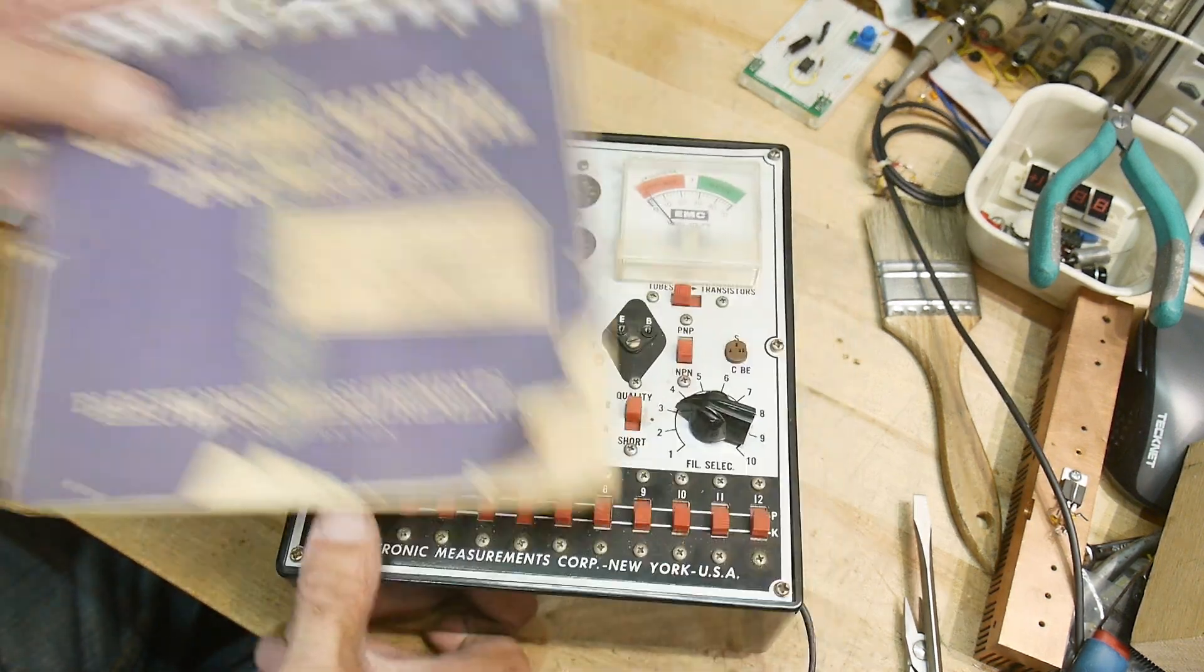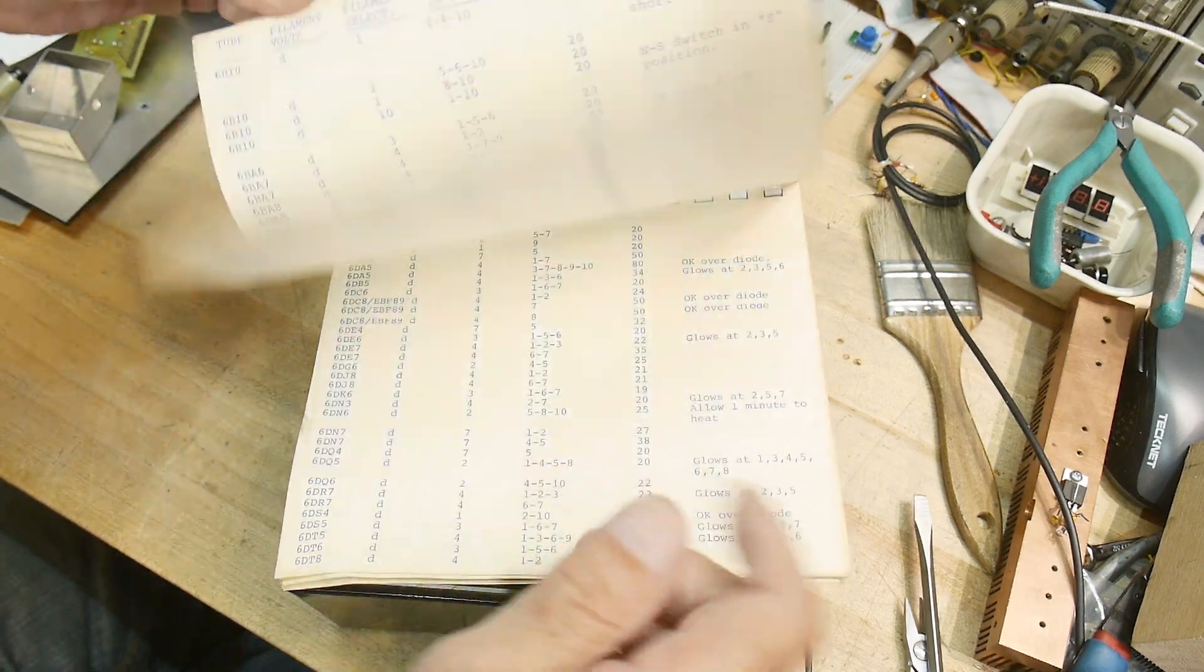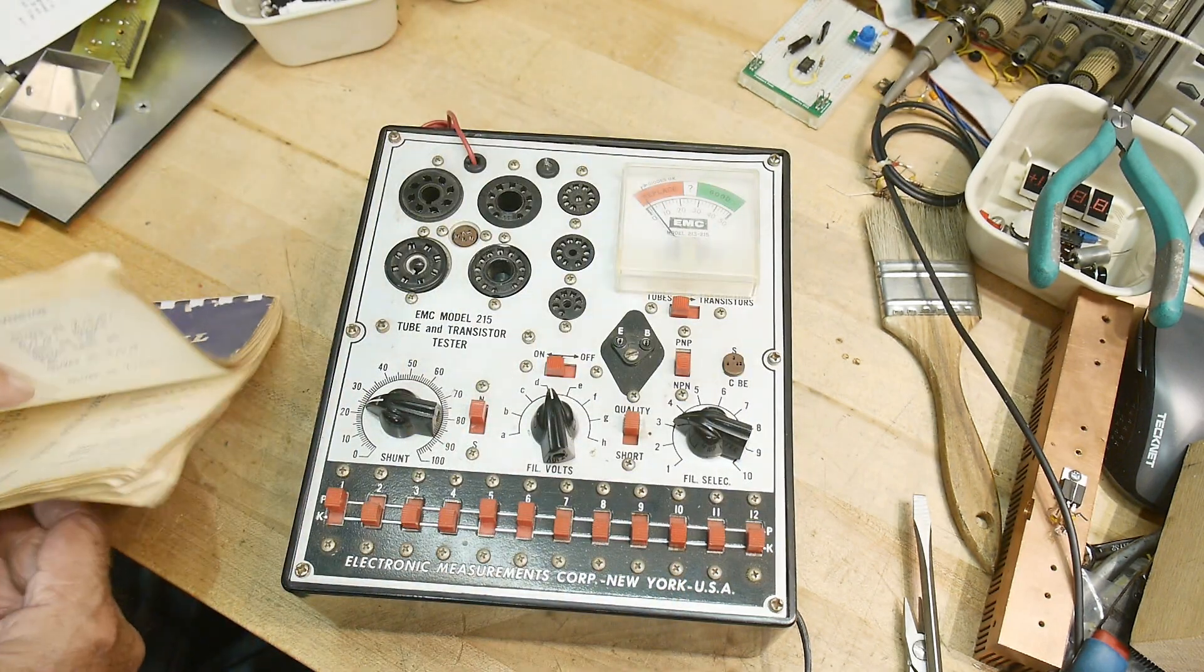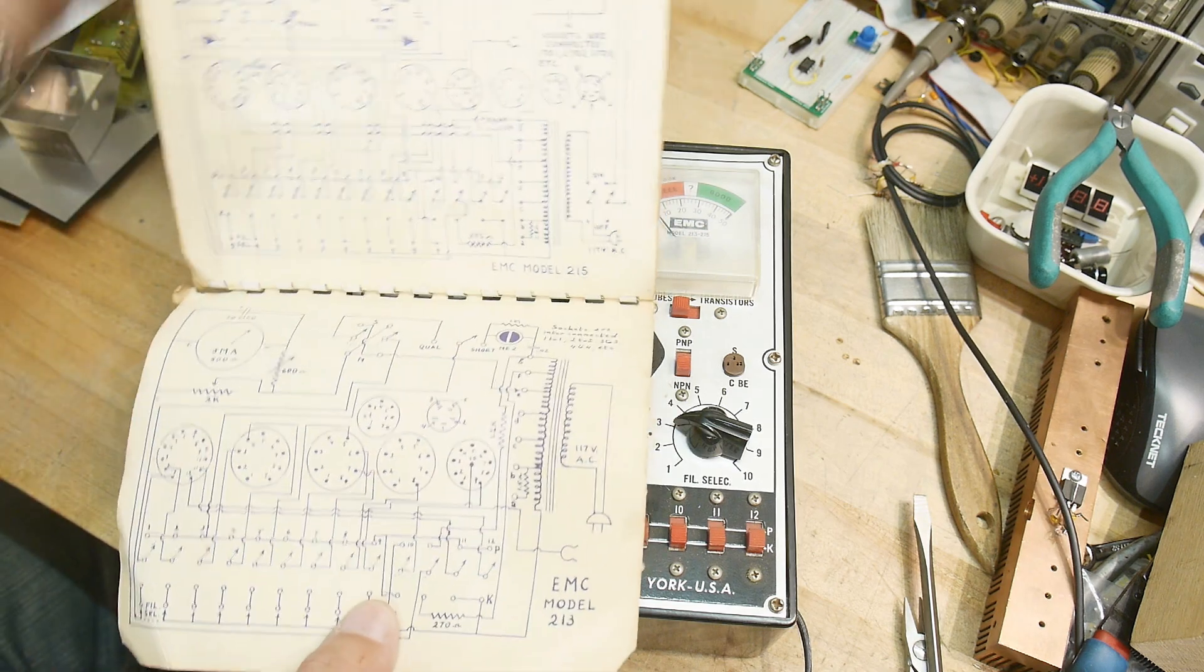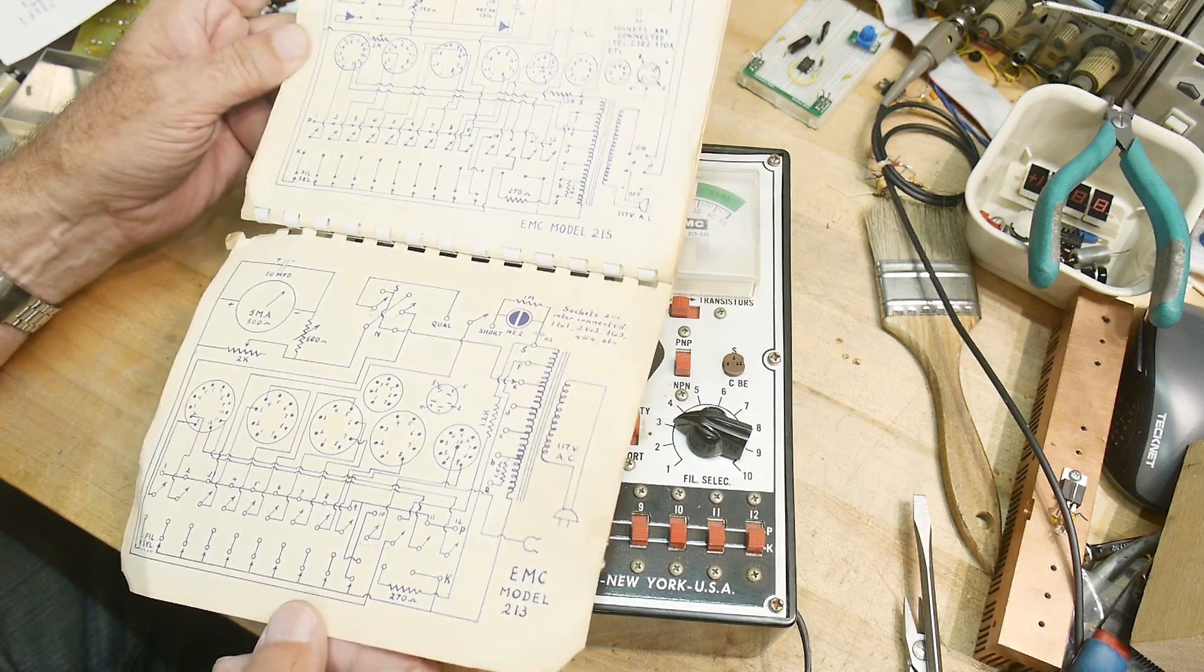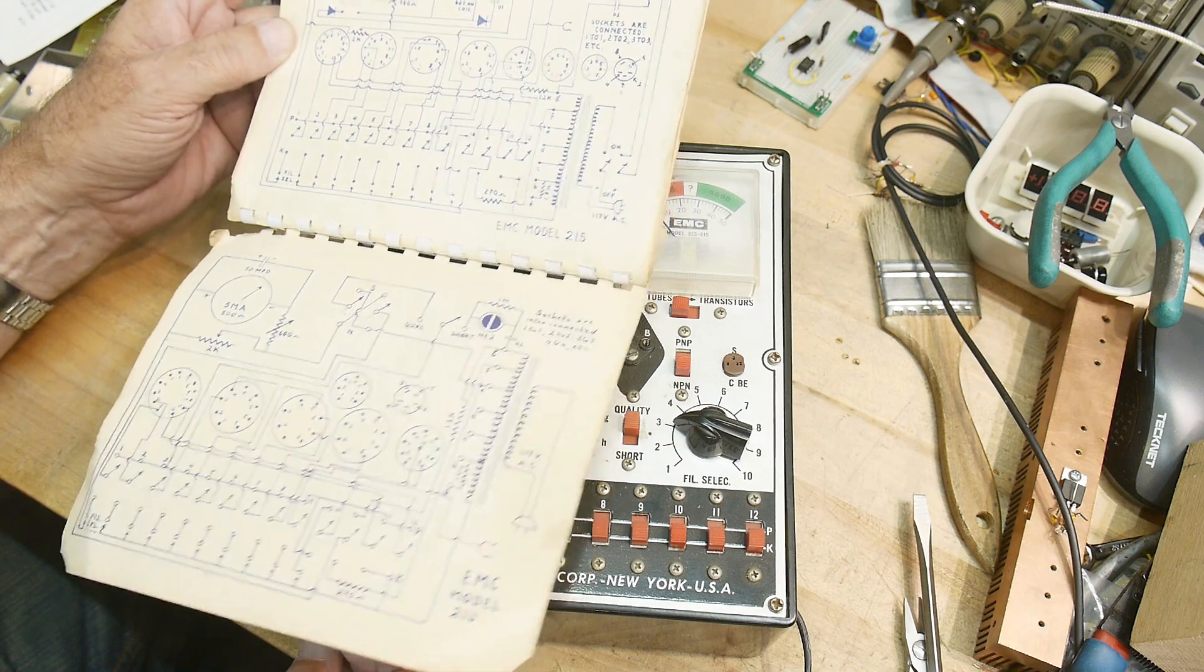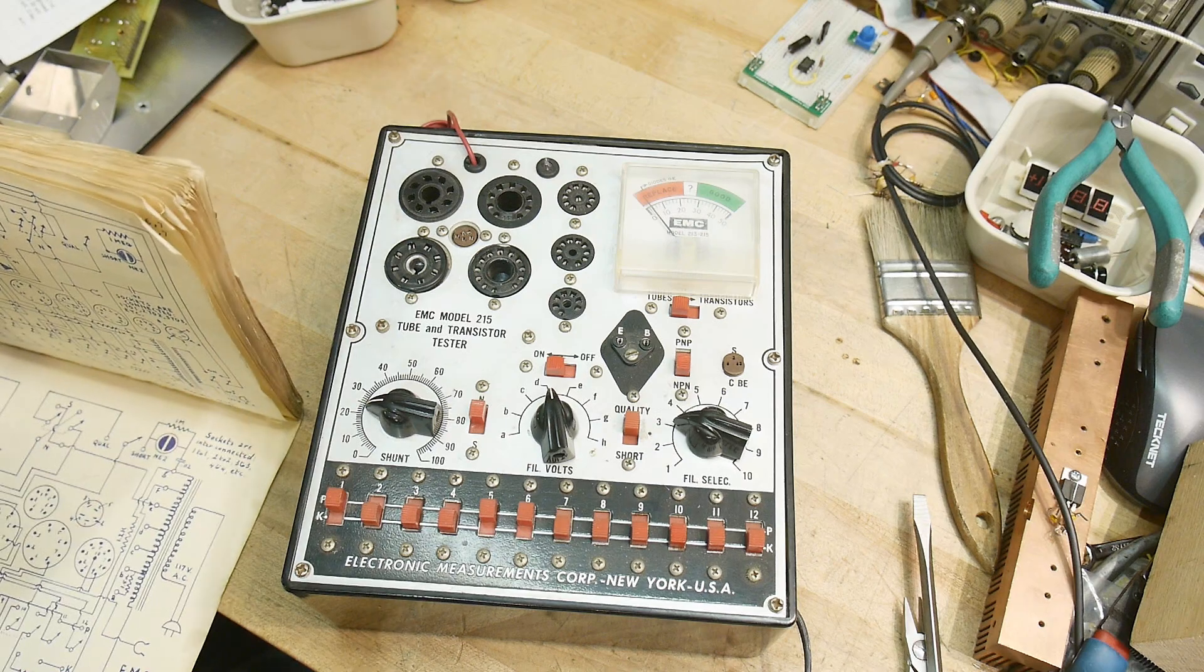It comes with the book. The book has got all the settings and everything. But I think there's a schematic in the back. Yeah, there's a schematic in the back. And there's no active components in this thing. So there's nothing to go wrong in here. It's a real crude one. Kind of the kind you'd get at the grocery store, I think.